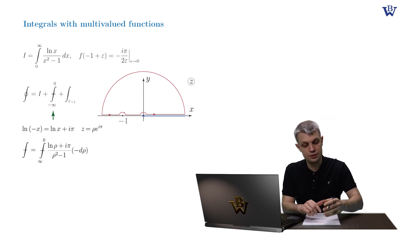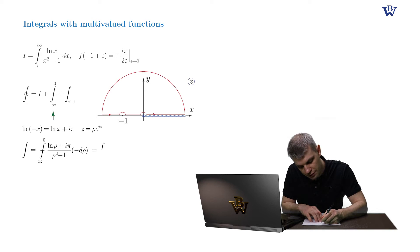So let's split this integral into two parts and interchange the limit of integration. We have from zero to plus infinity log ρ over ρ squared minus one dρ, plus iπ the integral from zero to plus infinity dρ over ρ squared minus one.